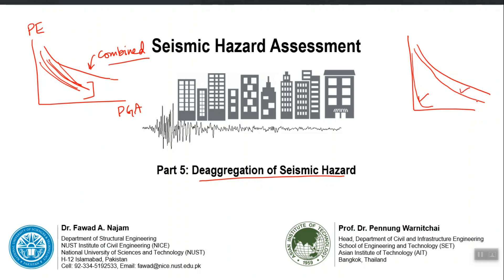Let us say the fault contributing significantly is a normal fault and the other is a strike-slip. This information is very useful because when I select ground motions for dynamic analysis, in the ground motion database we have thousands of records recorded from different types of faults. I will filter out all those records which are from a normal fault only, because that is the kind of fault contributing the most hazard at my site, and I will not consider strike-slip.